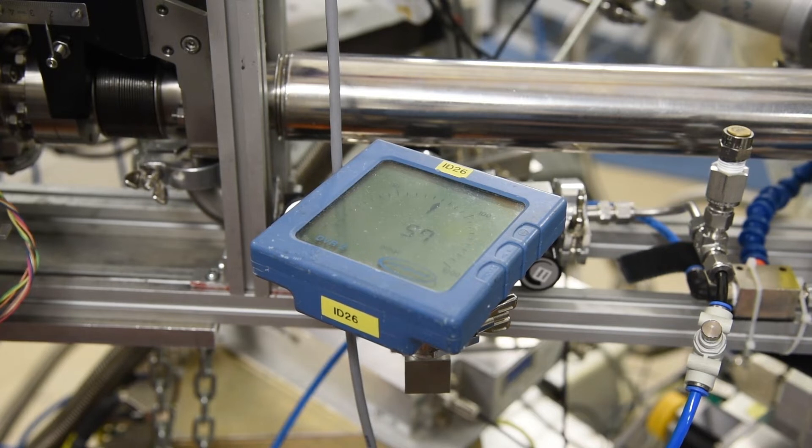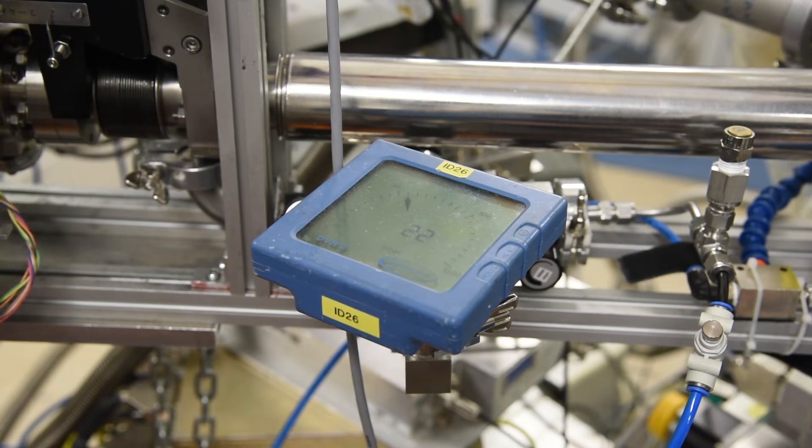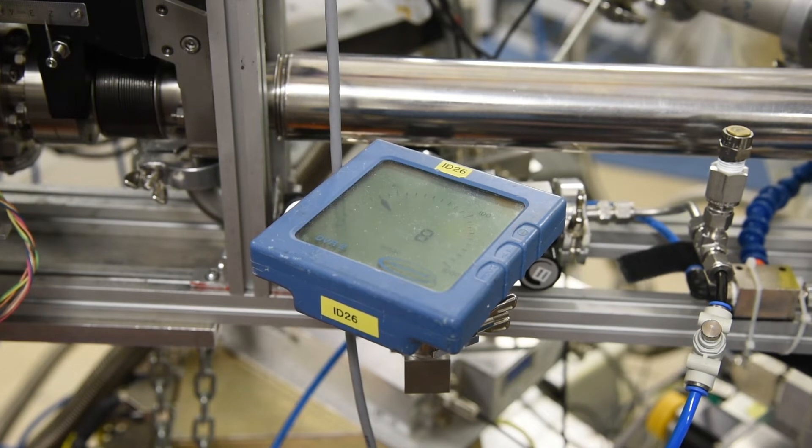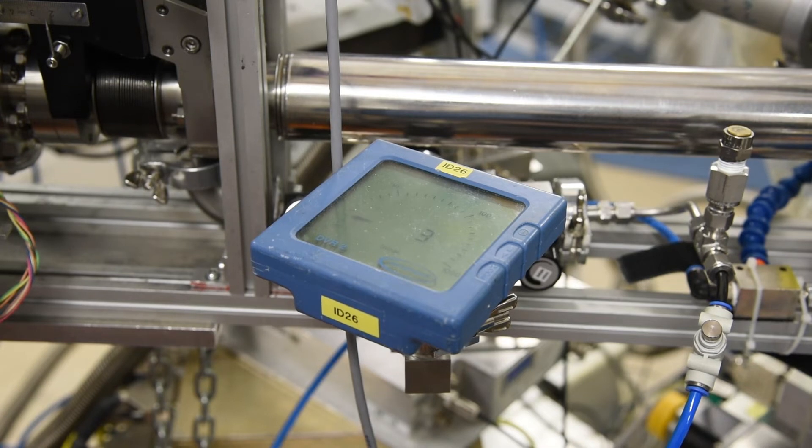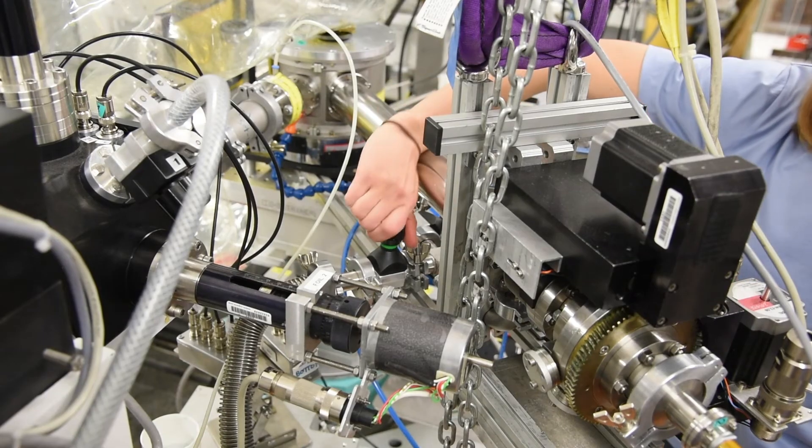Pump and purge with helium at least three times. Wait until the pressure is zero. Close the valve.